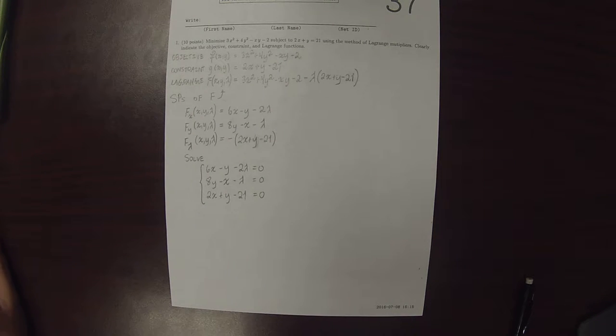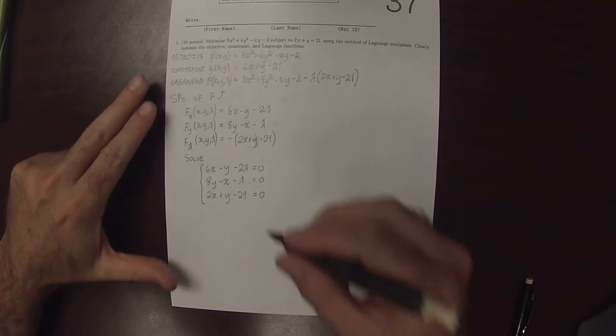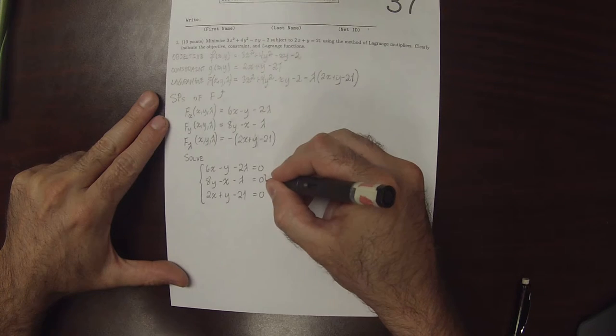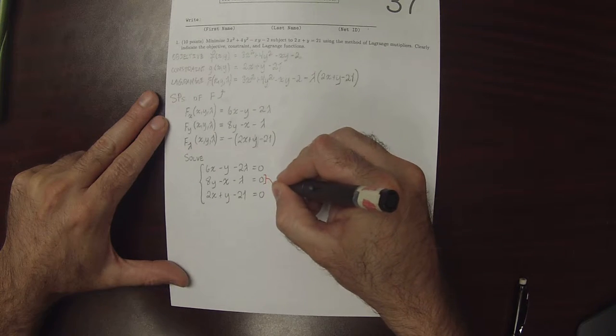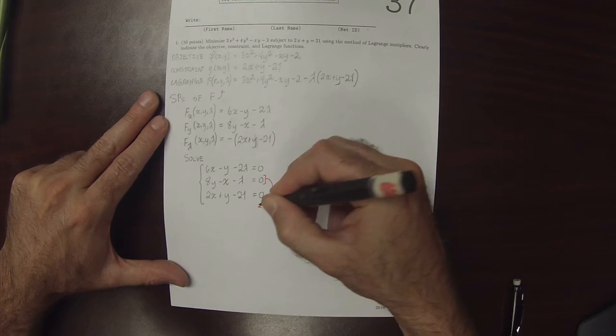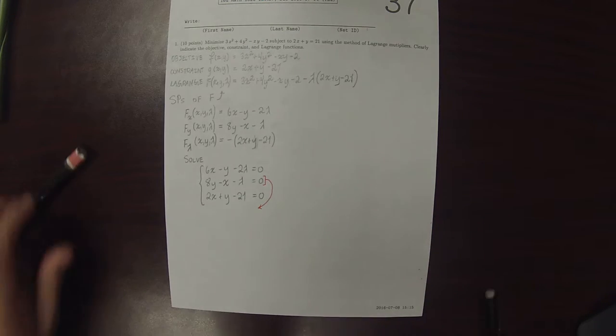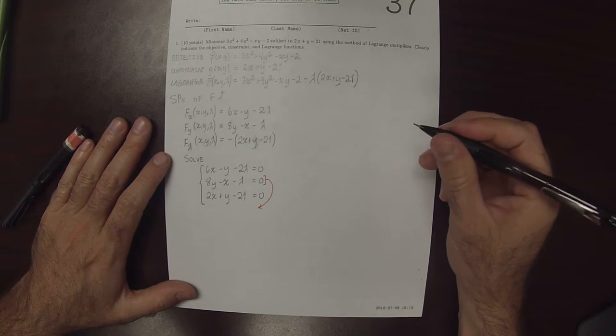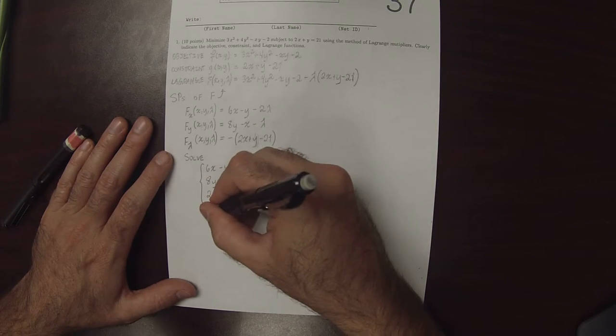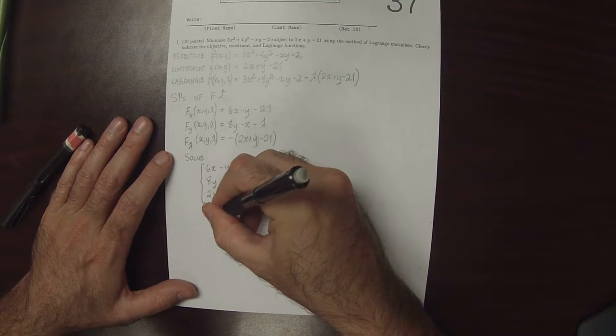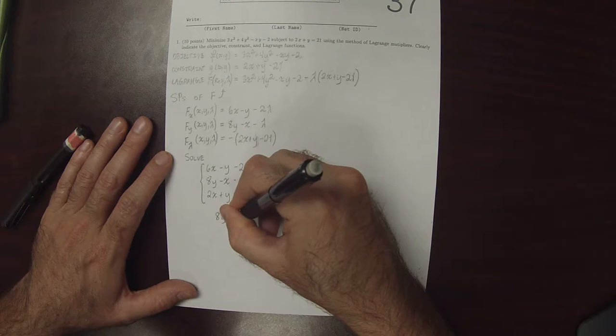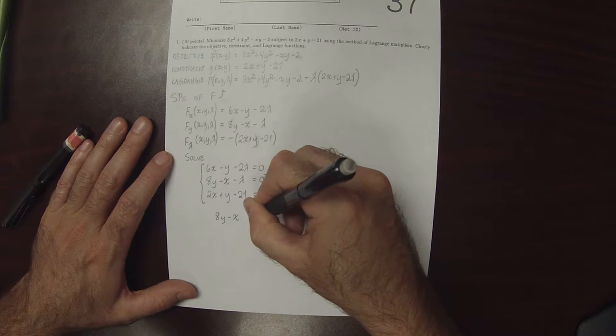So remember, the strategy when using the method of Lagrange multipliers is to solve for lambda first, eliminate lambda first. So this equation is the easiest one to solve for lambda with. So taking that equation, you can see that 8y minus x is lambda.